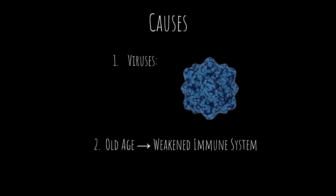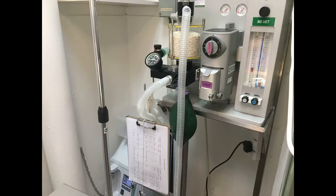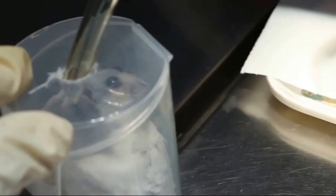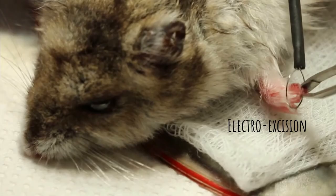It may be caused by viruses or due to a weakened immune system. The treatment is surgical removal. The hamster was placed under gas anaesthesia inside a container. A forcep lifts the skin wart and the curved scissors snips it off. No stitching is required in this case. Do note that electro excision will be used for a larger wart.